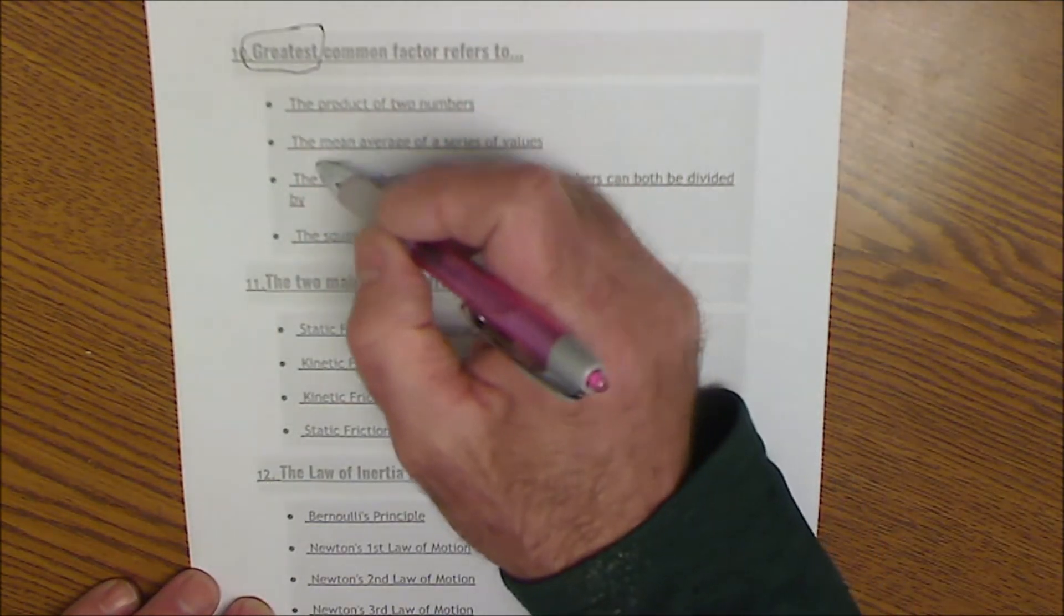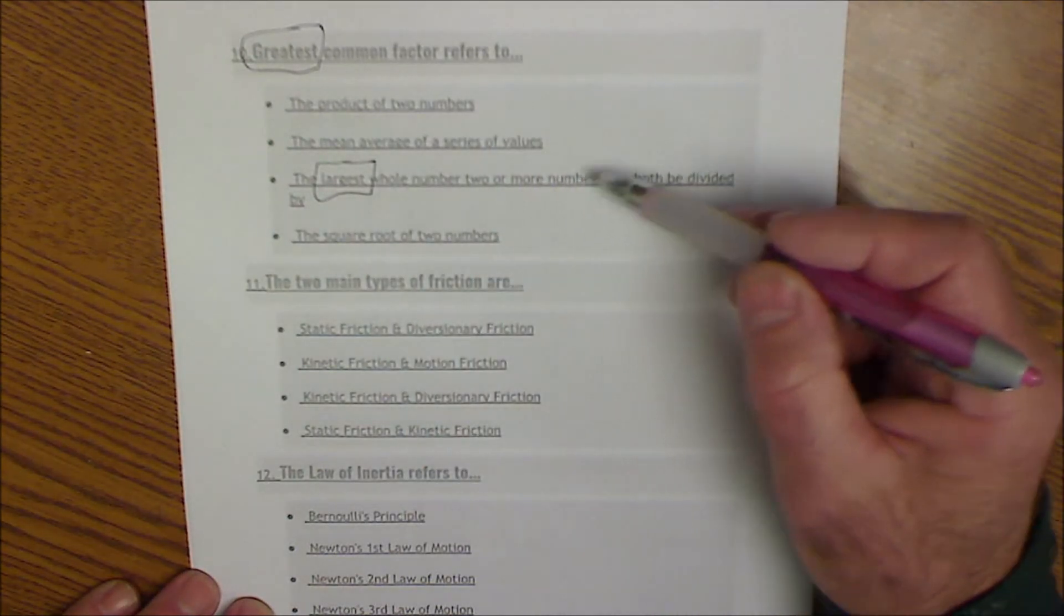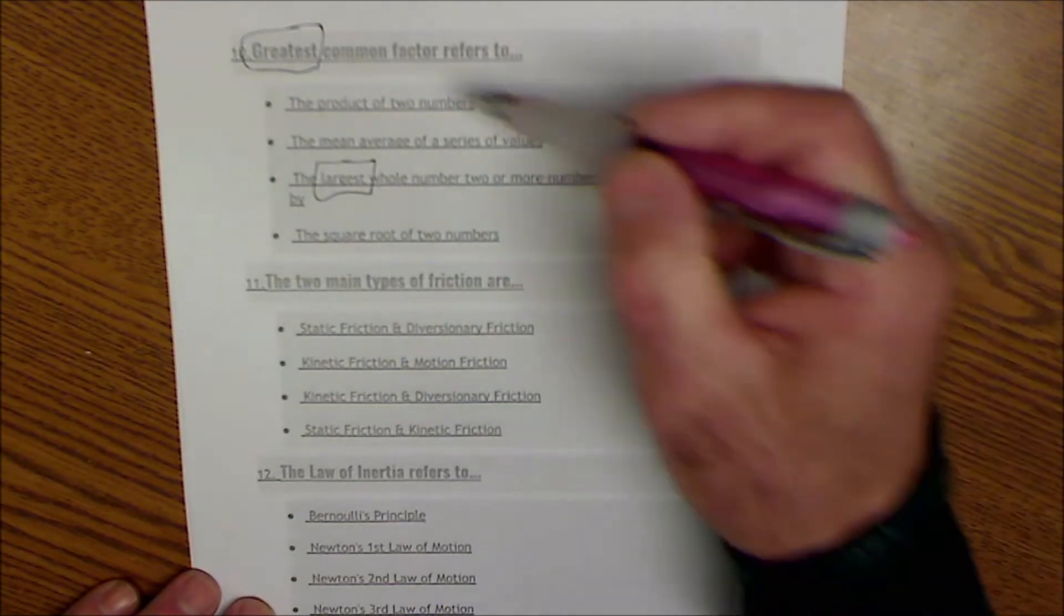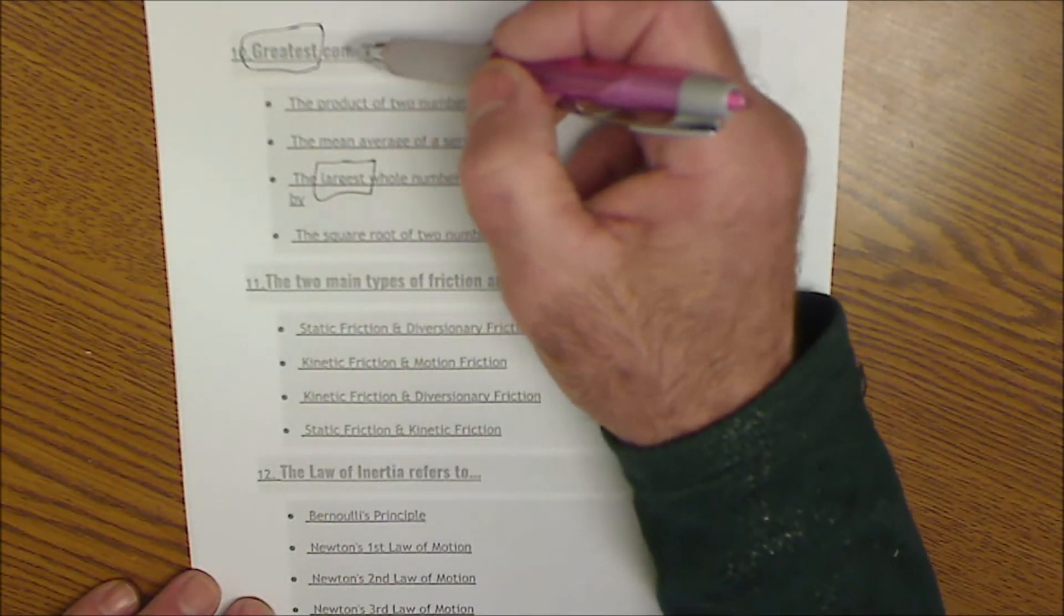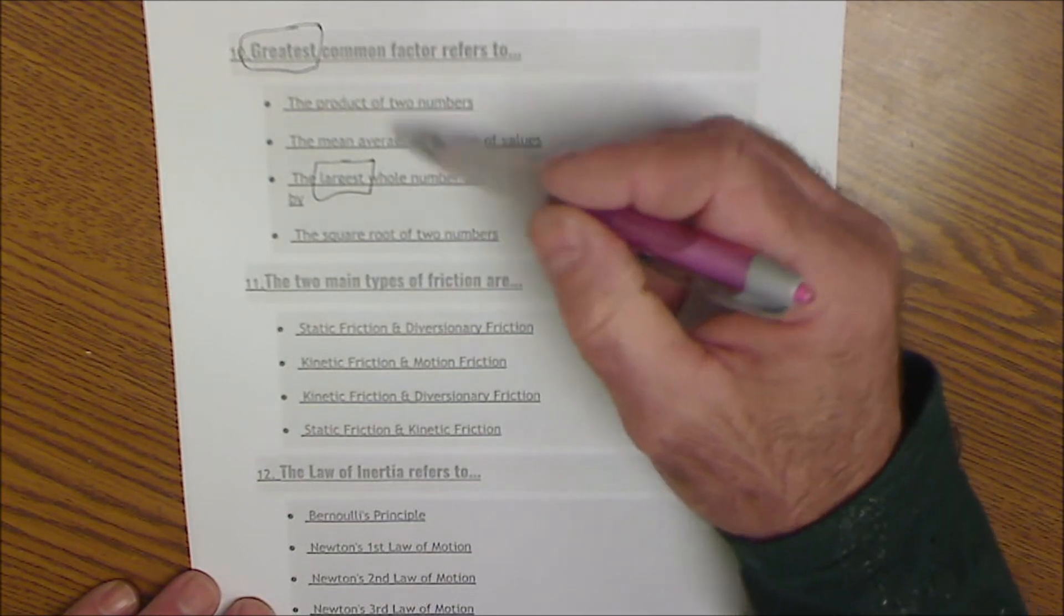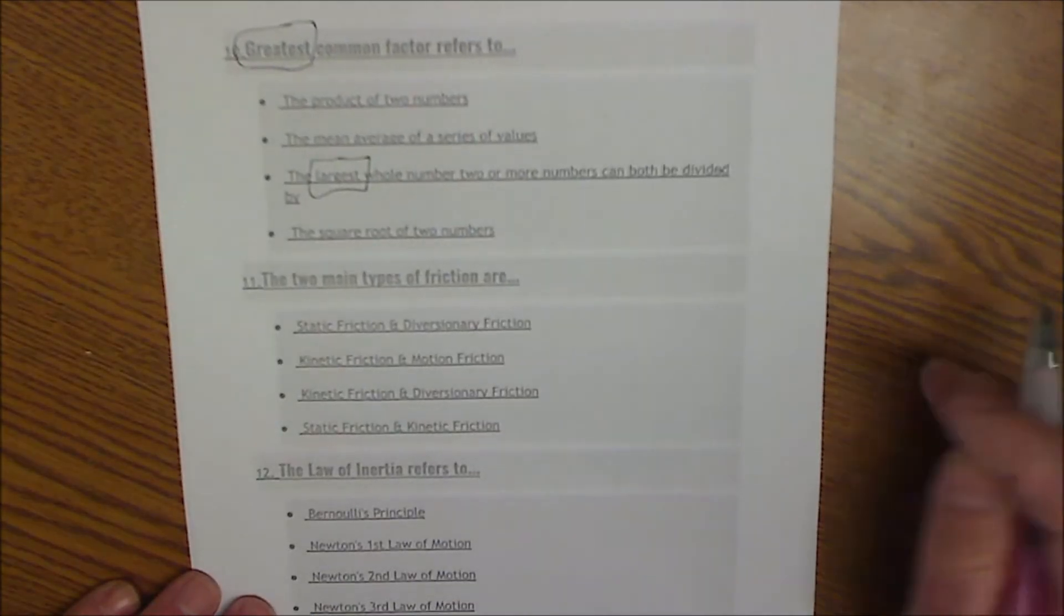So the greatest, you could connect that to the largest, whole number, two or more numbers can both be divided by. So even if you don't quite remember the GCF, the greatest common factor, you kind of figure that out through process of elimination. I mean, it says greatest. It's got to be the largest one.